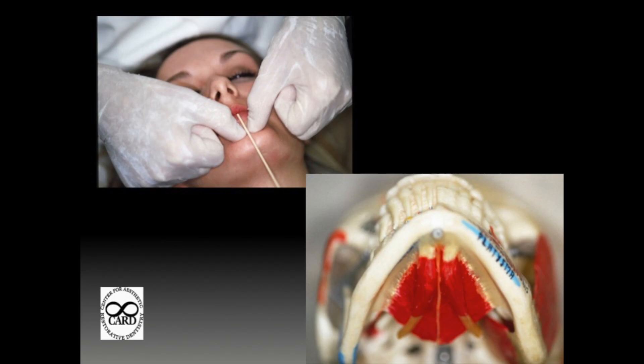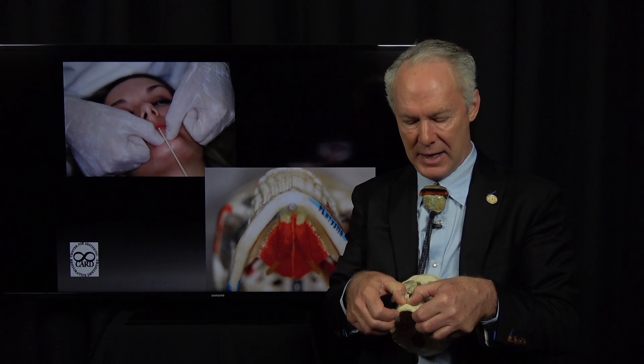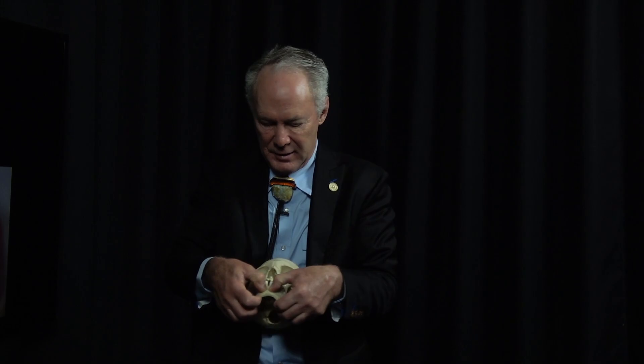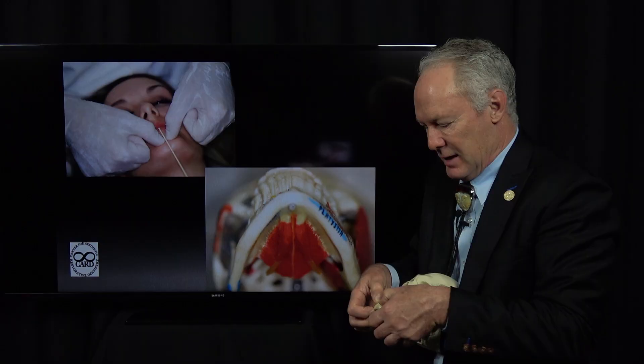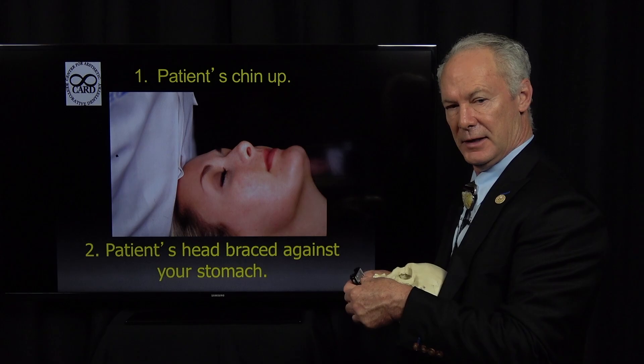The thumbs represent the digastric muscles. You should make a hard C when manipulating into centric relation, with the pointer finger and the thumb forming a hard C. Your wrists are up, fingertips are on the inferior border of the mandible, and your thumbs are almost touching on the chin — a very precise locked hold. With the patient's chin up, brace the head against your stomach. You don't want it out in space; you want it braced against your stomach with the chin up.